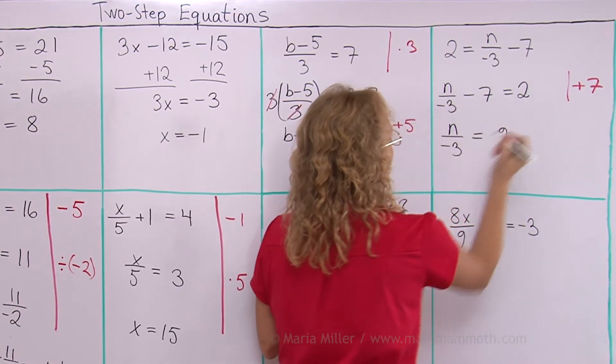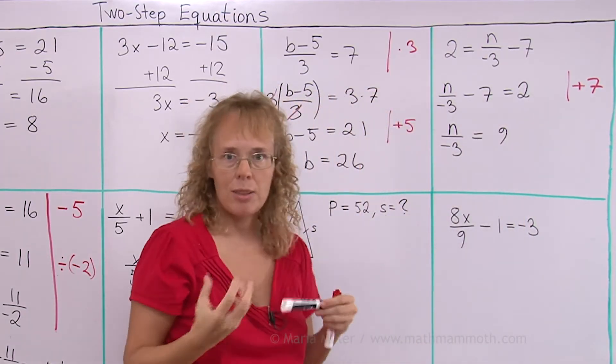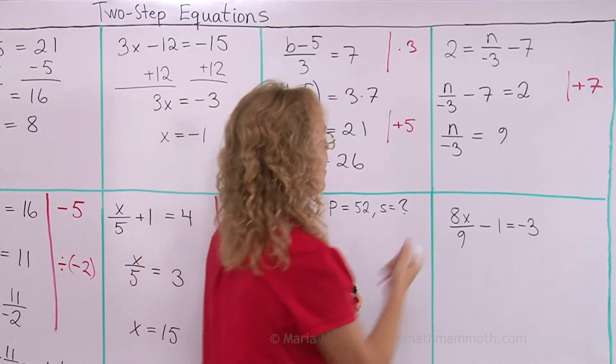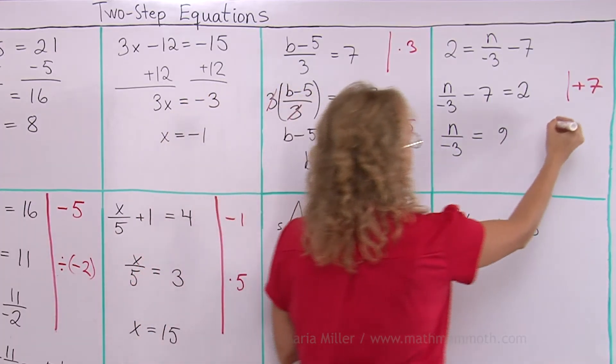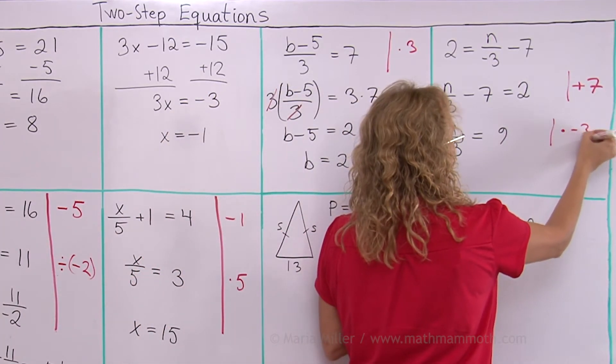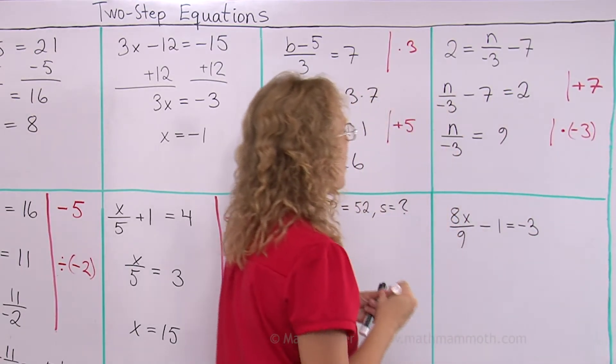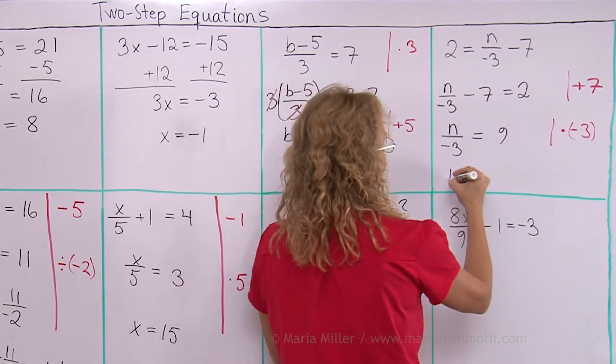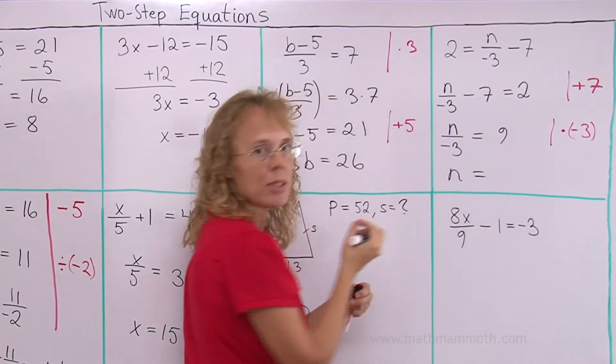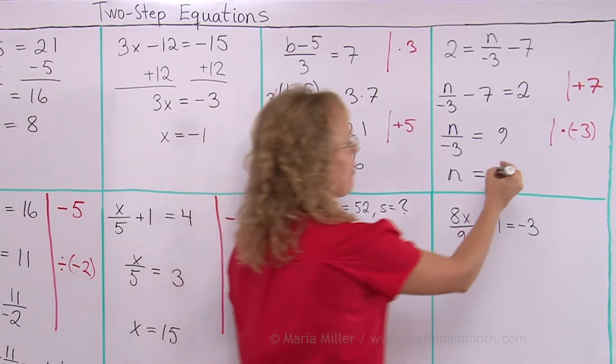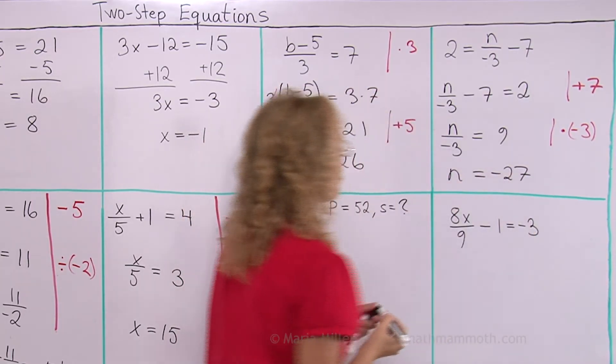And then that leaves n over negative 3 here. And here 2 plus 7, 9. And now it's a simple division equation. n divided by something so I have to multiply by negative 3. And that leaves n alone. And then 9 times negative 3 is negative 27. All solved.